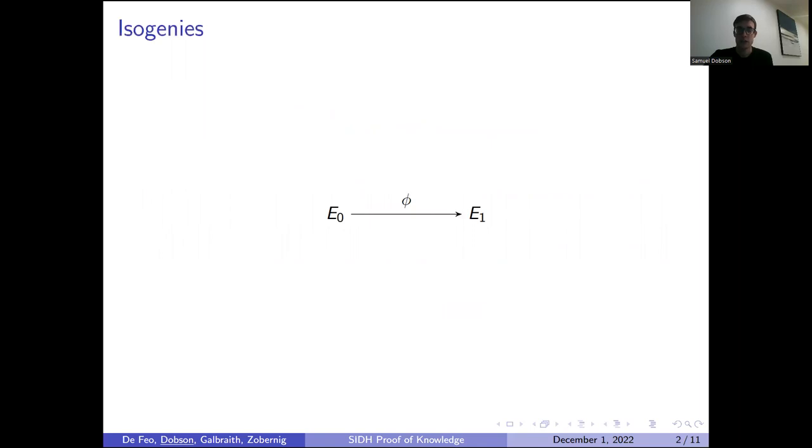Our setting is that we've got an isogeny, a secret isogeny, from one elliptic curve E0 to a second elliptic curve E1. The isogeny here is our secret key, and the two curves we can reveal publicly. It's assumed that it's difficult to compute the secret key given only those two curves.